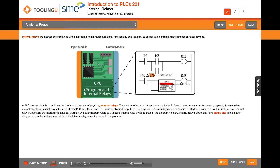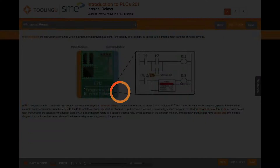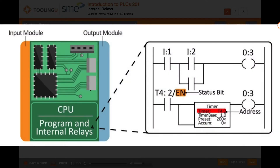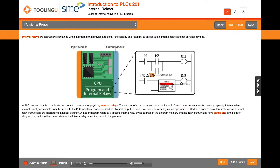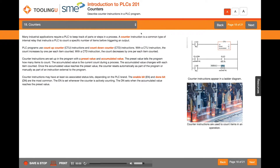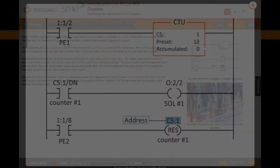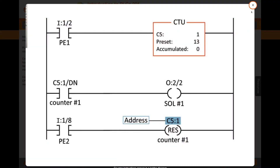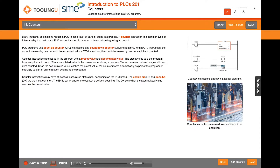Internal relays are instructions contained within a program that provide additional functionality and flexibility to an operation. Many industrial applications require a PLC to keep track of parts or steps in a process.